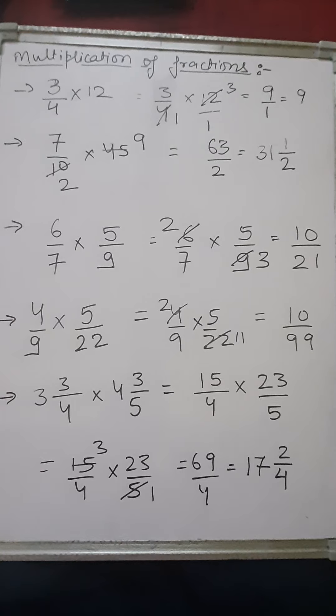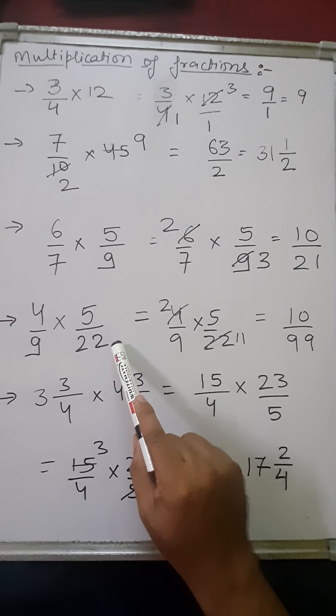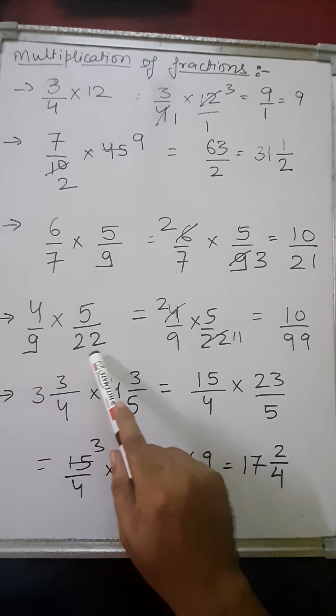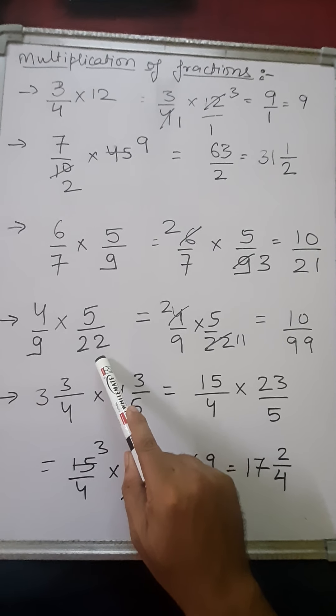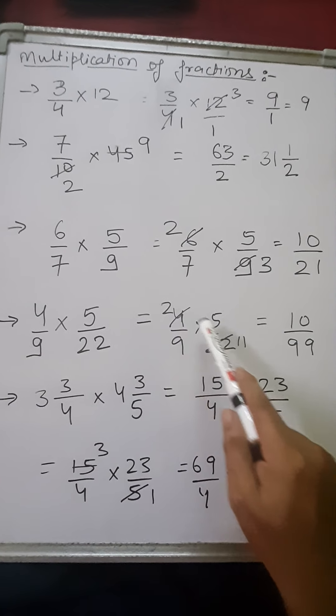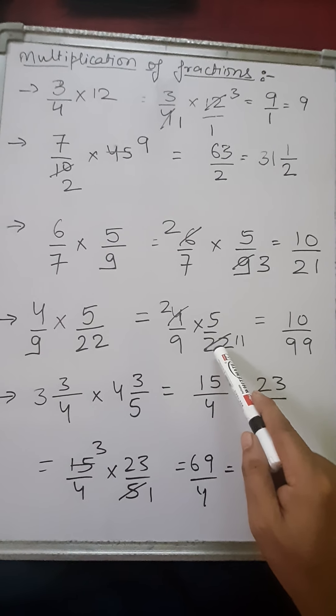Let's see another sum. Here you have to find the product of two fractions, 4 by 9 and 5 by 22. So when we cancel these two terms, you can see only 4 and 22 can be cancelled by 2.